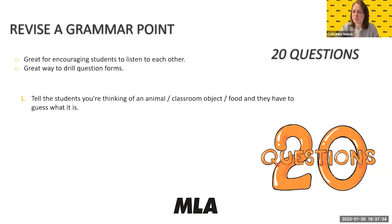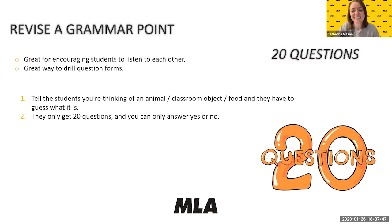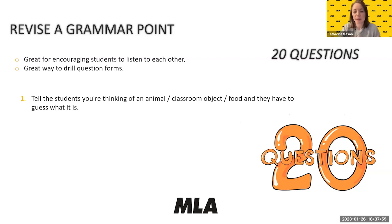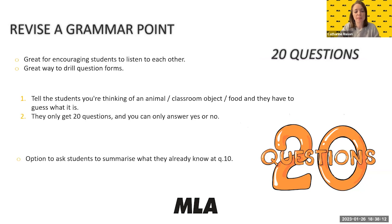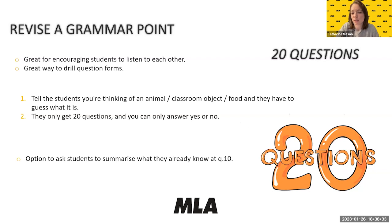The teacher tells the students they're thinking of an animal, a classroom object, or a food, for example, and students have to guess what it is using only 20 questions as a class. The teacher can only answer yes or no. To check that everyone is listening, you can ask certain students to summarize all the information found so far — for example, by question 10, summarize: 'The animal can swim and it is big.'